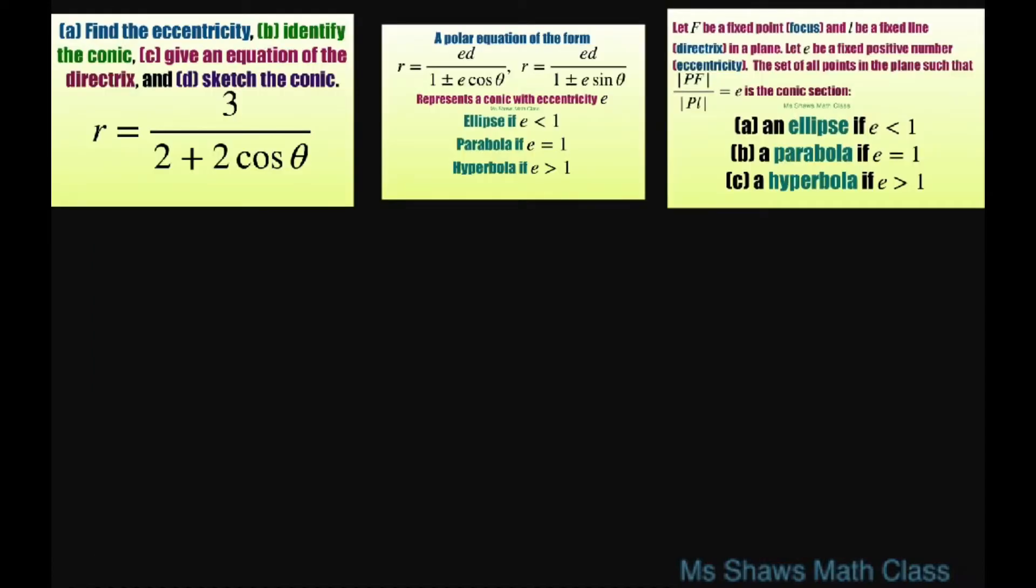First, let's do the first three parts. Let's look at what form we have. We have this form here with a plus, so our denominator has plus e cosine theta. The only problem is we need a 1 here and we have a 2 here. So let's fix that.